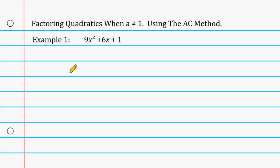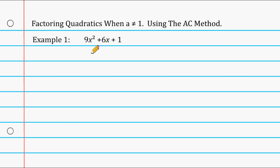What we're going to practice in this tutorial is factoring quadratics when the a term of our quadratic is not equal to 1. A lot of times you're going to see quadratic equations that start with just x squared, but like with this example here we have a coefficient other than 1 in front of the x, and sometimes those can trip up a lot of students. We're going to practice how we can factor out these types of quadratics.